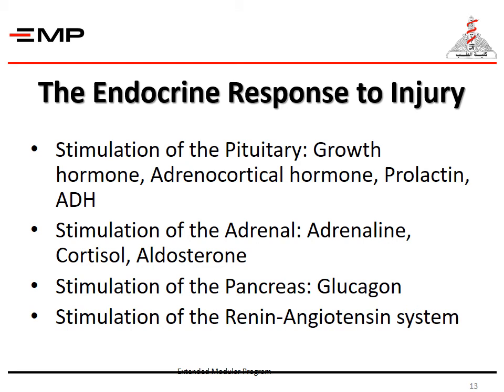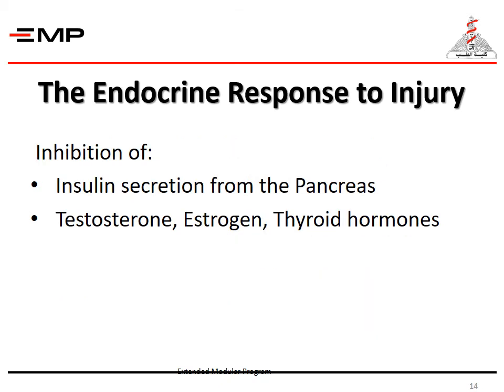The endocrine response to injury includes stimulation of certain endocrine glands and inhibition of others. There is stimulation of the pituitary with increased secretion of growth hormone, adrenocortical hormone, prolactin, and antidiuretic hormone. There is stimulation of the adrenal with increased secretion of adrenaline, cortisol, and aldosterone, stimulation of glucagon-secreting cells of the pancreas, and stimulation of the renin-angiotensin system. On the other hand, there is inhibition of insulin secretion from the pancreas, and inhibition of testosterone, estrogen, and thyroid hormone secretion.